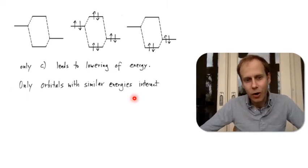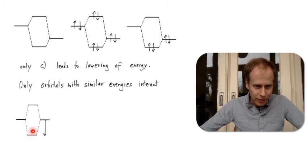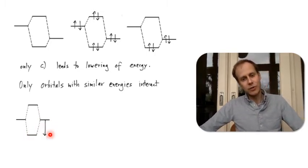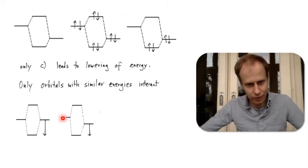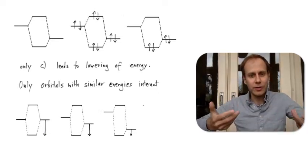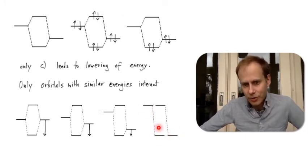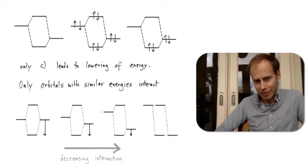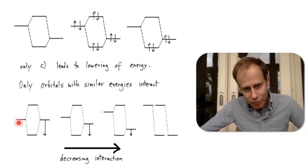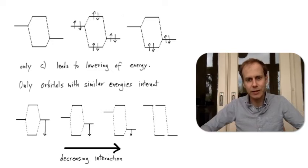There is one more important point: only orbitals with similar energies actually interact. If two reactant orbitals have the same energy, electrons jumping to a lower molecular orbital energy gives a significant reduction. But as the orbitals become more dissimilar in energy, this reduction becomes shorter and shorter, making the reaction less energetically favorable. In the extreme case, when the energy levels of the two reactants are completely different, there is zero energy reduction and no tendency for the reaction to happen at all. The key principle is that reactant orbitals interact more favorably when they have more similar energies.